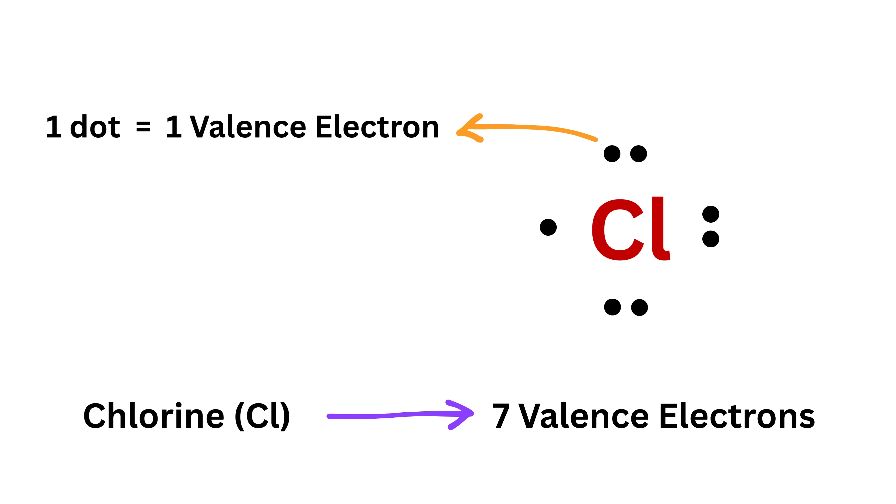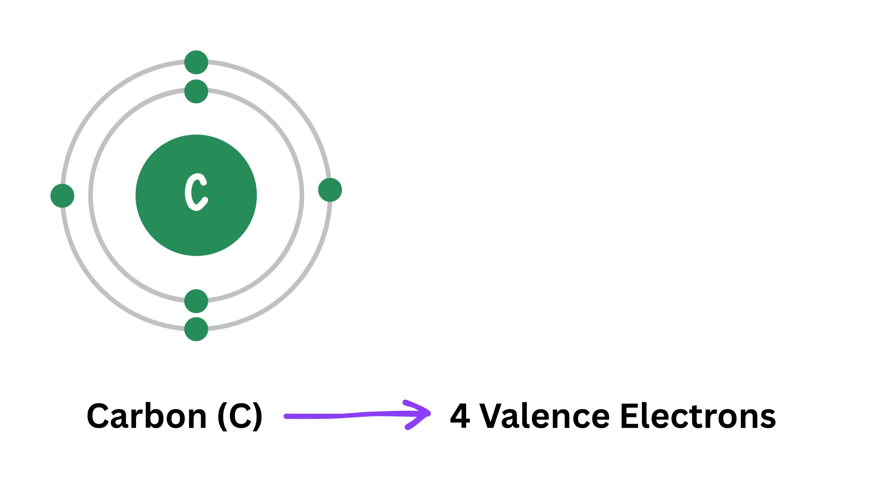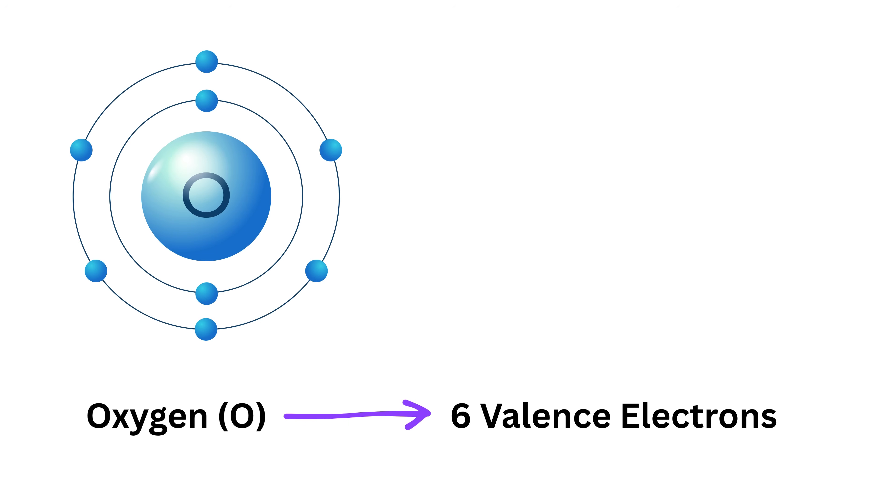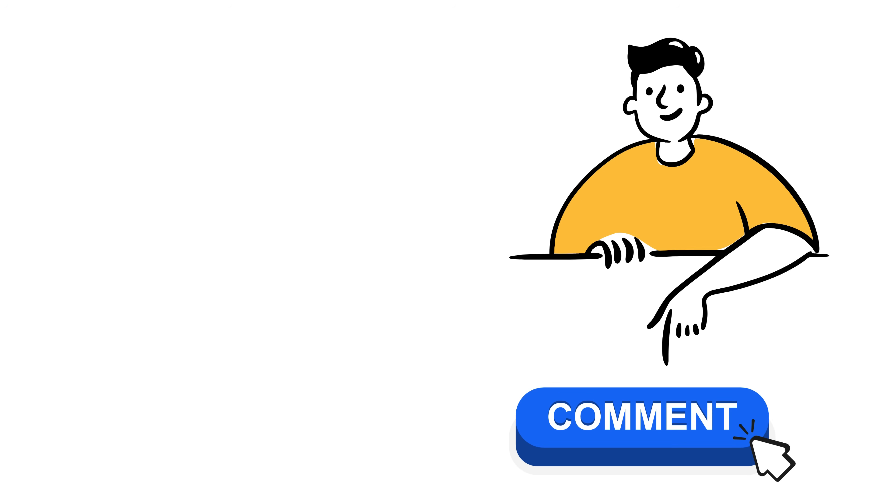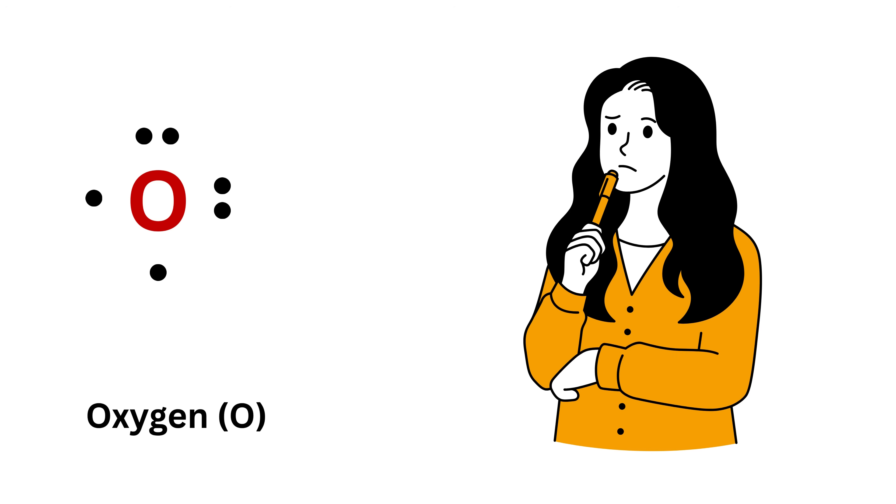Every dot you draw stands for one valence electron. Now let us try this for a few simple elements. The simplest one is hydrogen, which has one valence electron, so its diagram is the symbol H with one dot. Carbon has four, so draw C with four dots, one on each side. Oxygen has six valence electrons, so draw O with six dots. Now let me know in the comments how many valence electrons nitrogen has and how you will draw its Lewis structure. It doesn't really matter where exactly you start placing the dots, as long as they are around the symbol and no more than two on one side.